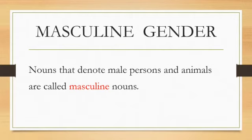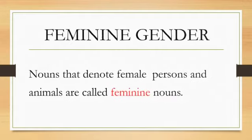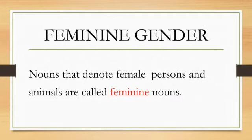Masculine gender: Nouns that denote male persons and animals are called masculine nouns. Feminine gender: Nouns that denote female persons and animals are called feminine nouns.